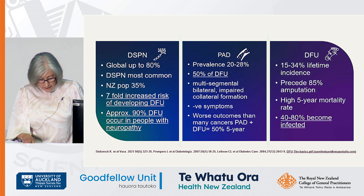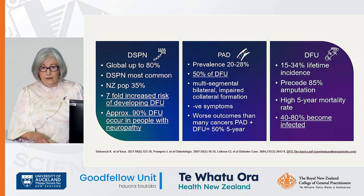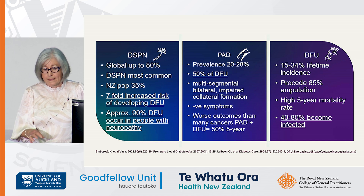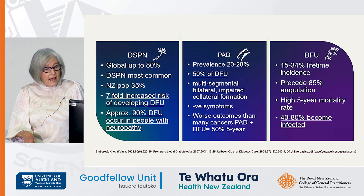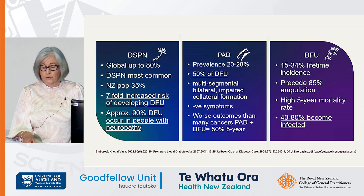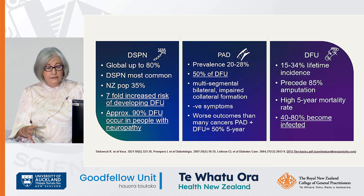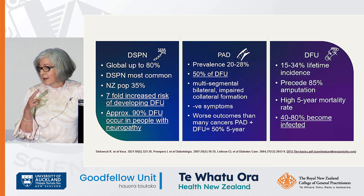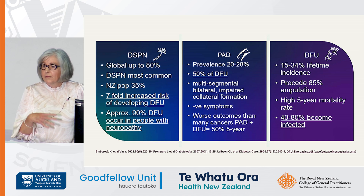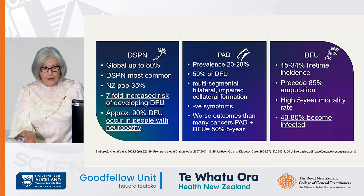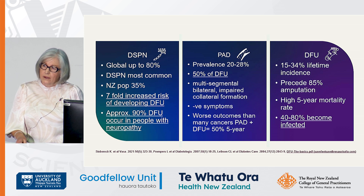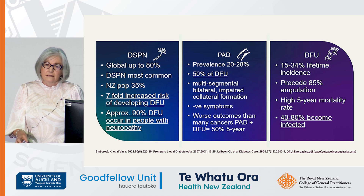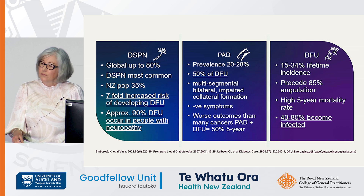Neuropathy confers a sevenfold increased risk of developing a foot ulcer. Most diabetic foot infections will have a foot ulcer present, and 90% of foot ulcers occur in people with neuropathy. On top of that, peripheral arterial disease has reasonably high prevalence — roughly 50% of diabetic foot ulcers will also have peripheral arterial disease. There's also a relationship between peripheral neuropathy and PAD; people with neuropathy are more likely to develop PAD. The lifetime risk for someone with diabetes to develop a foot ulcer is actually quite high.